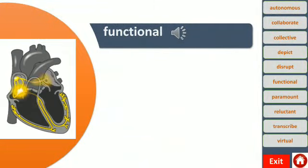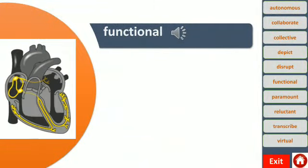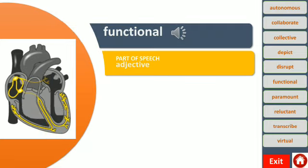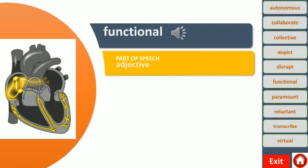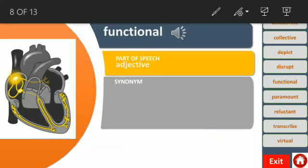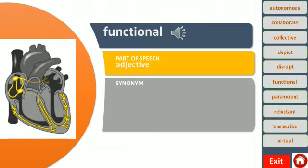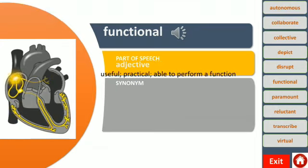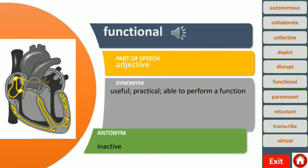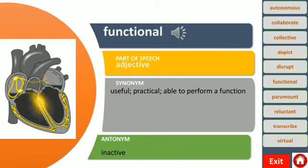Here is the word functional. This word functions as an adjective, which means it describes a noun or a pronoun. It means useful, practical, able to perform a function. For example, the flashlight was still functional after I dropped it. The antonym of this word is inactive.